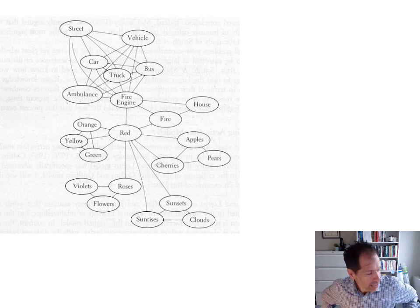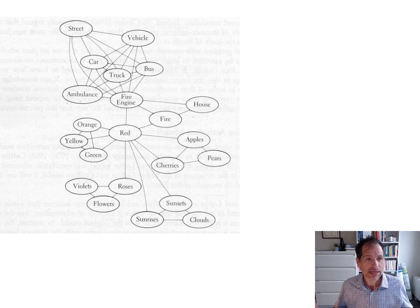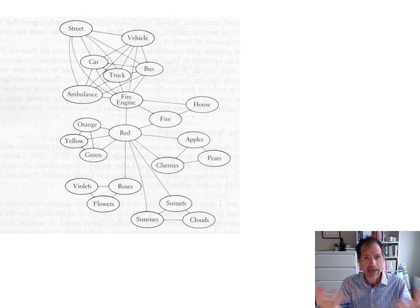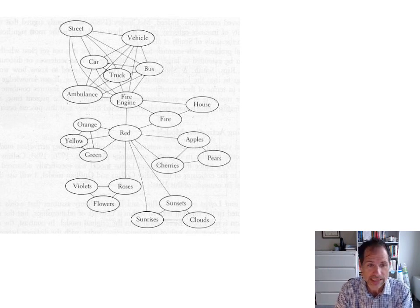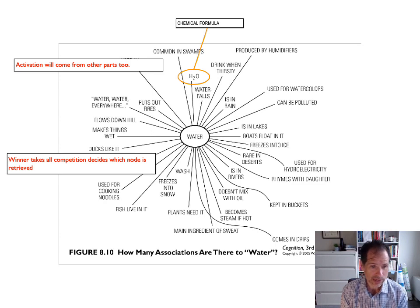So this explains not only how we have closely related and distantly related concepts, but also how we might be able to retrieve information. It has to do with if you're asked a question that comes from two different parts of a network — the information spreads from one part of the network, spreads from the other part of the network, and then it might sum at the node that you need to retrieve. So you've got a lot of information about water, right? You've got concepts related to what it is, what it can do, properties — it's in lakes, boats float on it, it freezes into ice, it's in rivers — including the chemical formula.